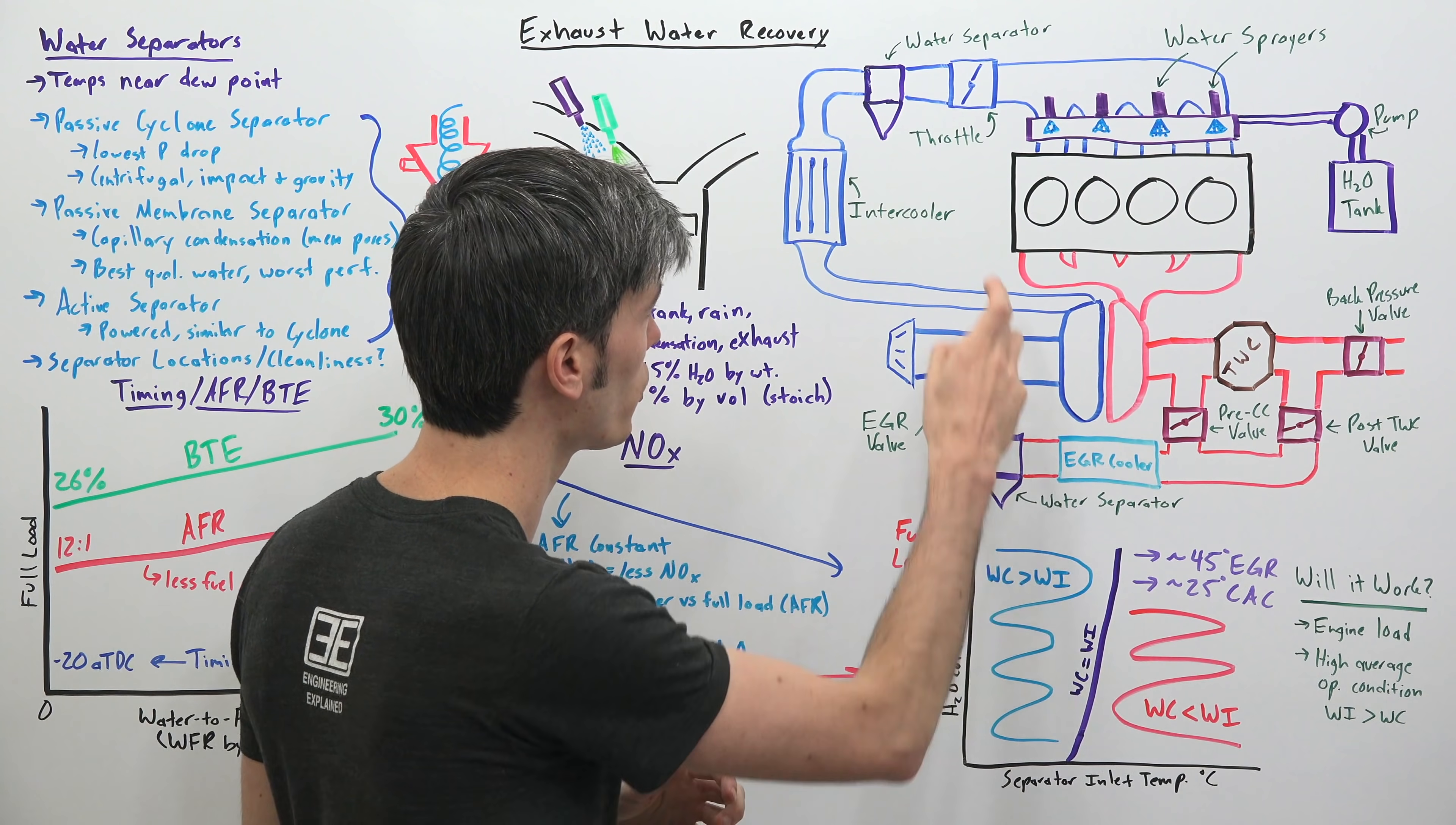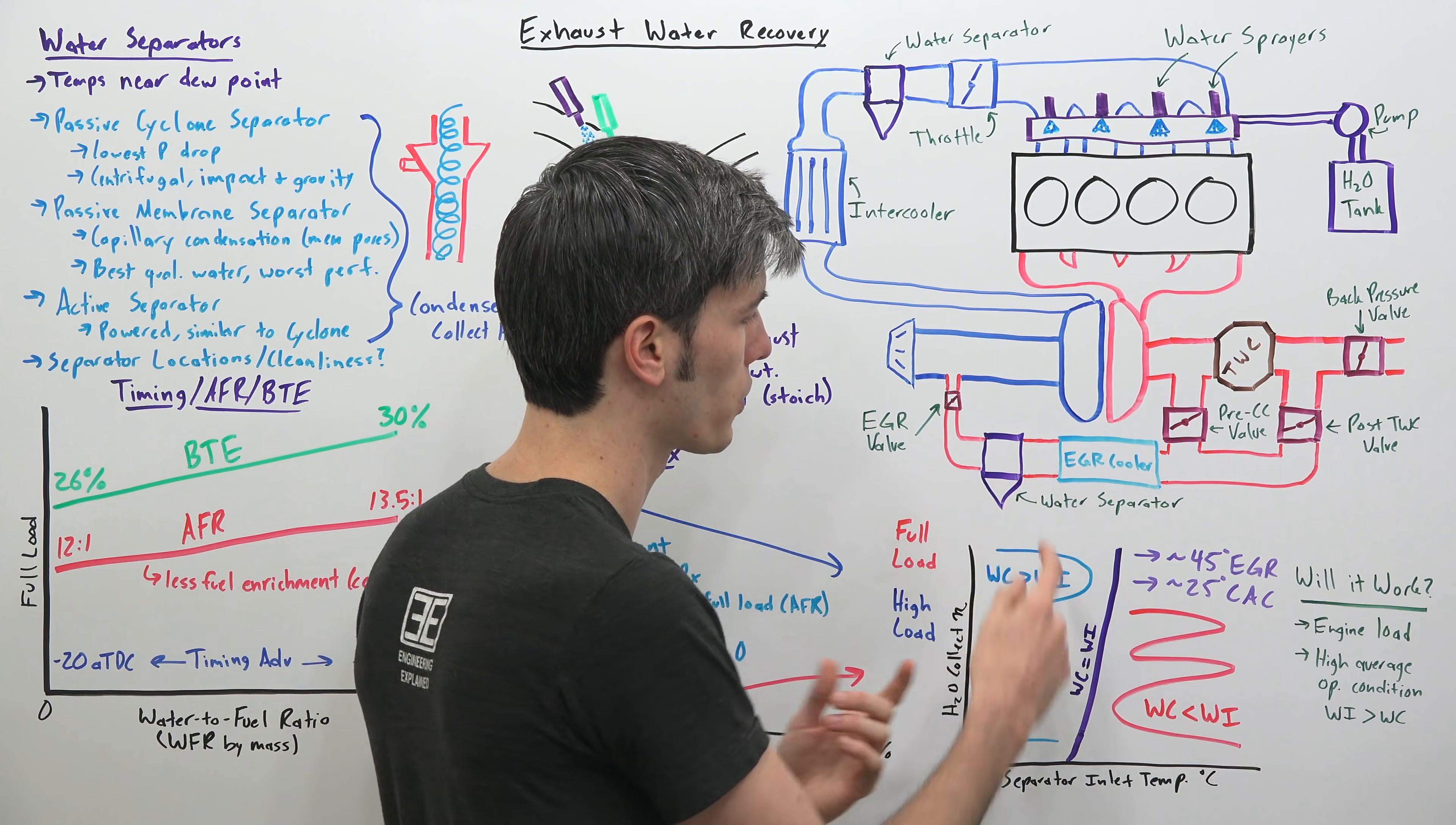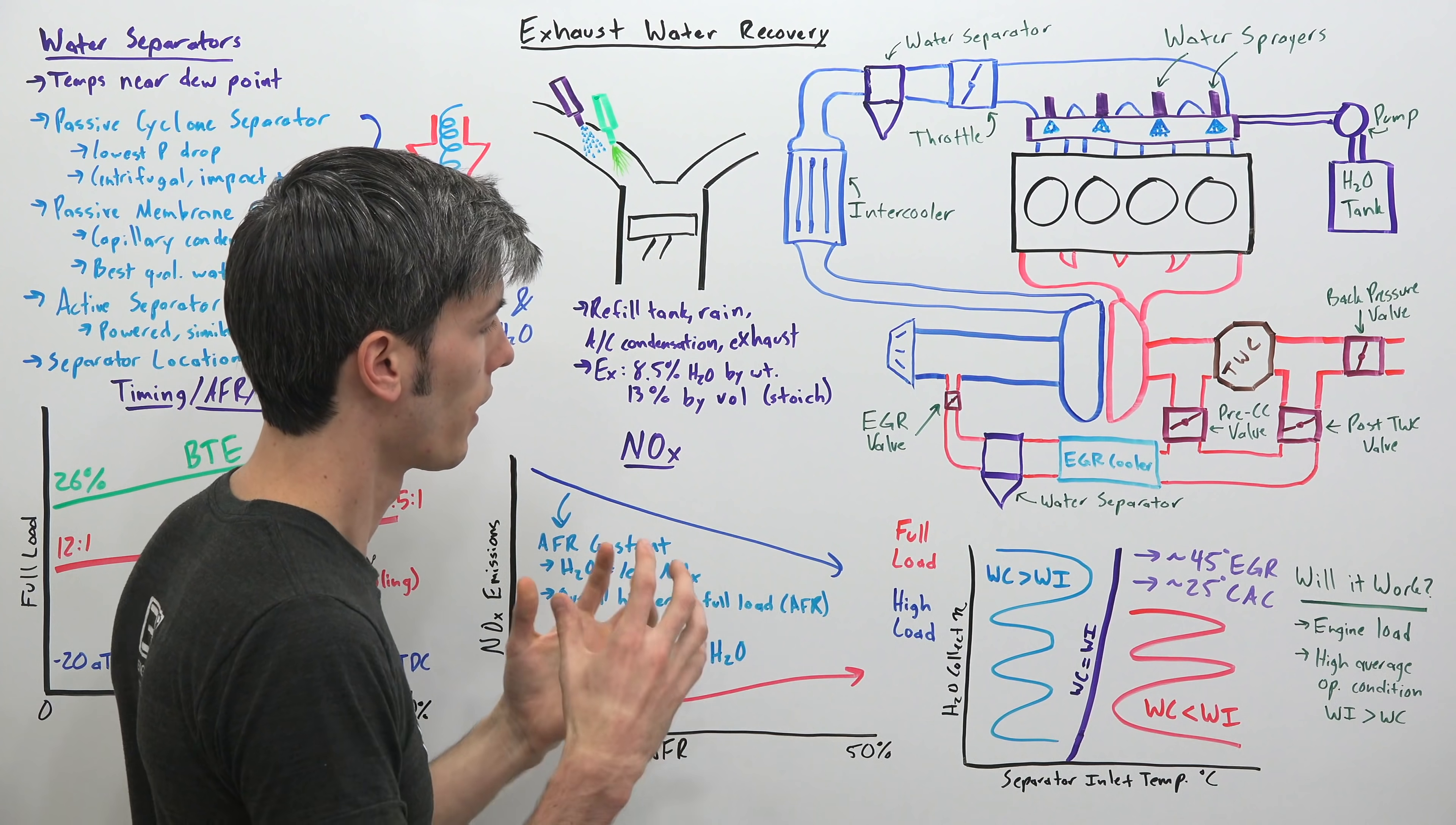And so in this study they looked at the separator inlet temperature coming into these water separators versus the collection efficiency of the devices that they were using. And so they kind of were able to map out what operating conditions of the engine would actually allow for this system to just be completely sustainable or would always be producing enough water. And so if they were able to keep the temperature before entering the EGR water separator after coming through the exhaust gas recirculation system, if they were to keep that at 45 degrees or less celsius then they could sustainably run it. And with the charged air separator if they were able to keep those temperatures below 25 degrees celsius then they could make this system work.